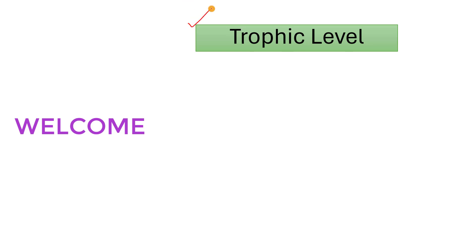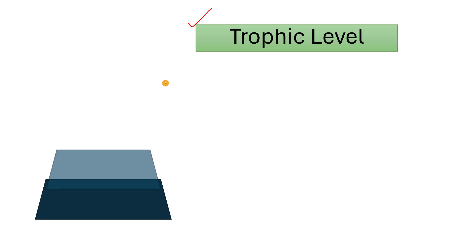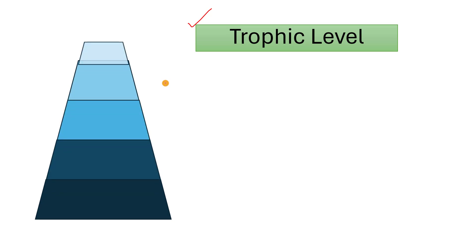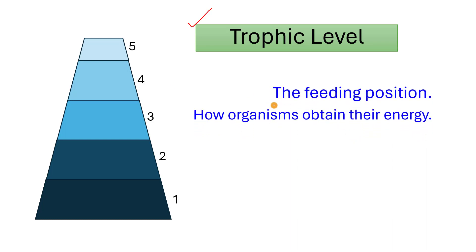The trophic level is the position of a group of organisms in the food chain or food web. As we have learned, troph means nourishment. So trophic level means the level of nourishment of the organisms. The concept of trophic levels is based on how organisms obtain their energy.